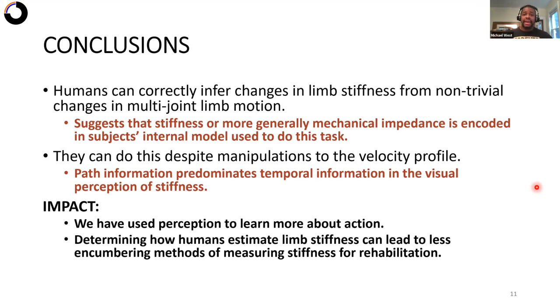And then secondly, we believe that by answering the question, how are subjects estimating stiffness from visual observation, we can kind of move towards a new, less encumbering method of rehabilitation for those who have lost motor function.